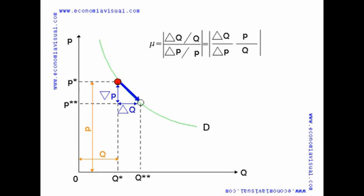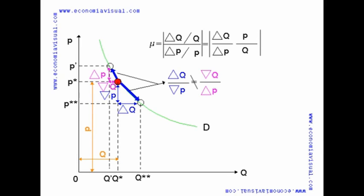If we calculate now the elasticity considering a point of the curvilinear demand with a higher price and less quantity, we can graphically verify that the inverse of the slope would be different. Consequently, it will determine a completely different elasticity.